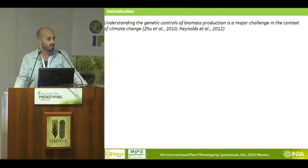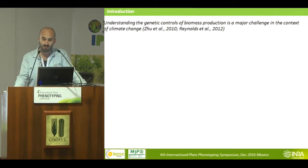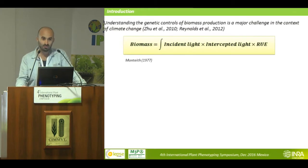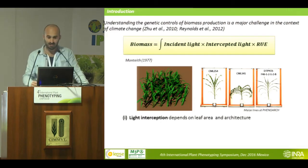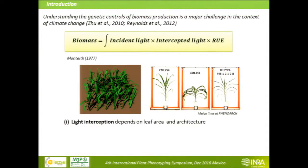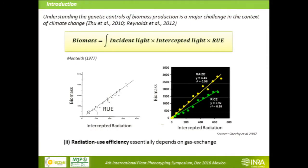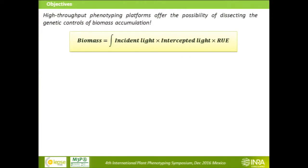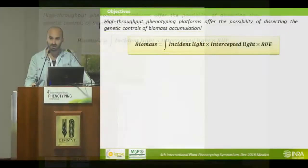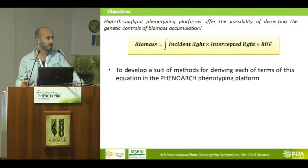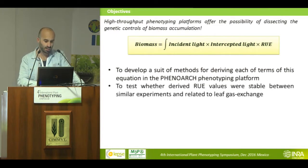As context, understanding the controls of biomass accumulation is a major challenge in the context of climate change. According to the equation of Monteith, biomass can be expressed as a function of incident light reaching the crop, the amount of light intercepted depending on leaf area and architecture, and how efficiently this intercepted light is converted to biomass — the radiation use efficiency, which depends on photosynthesis. We developed a suite of methods for deriving each term of this equation and tested whether radiation use efficiency values were stable between experiments and related to leaf gas exchange.